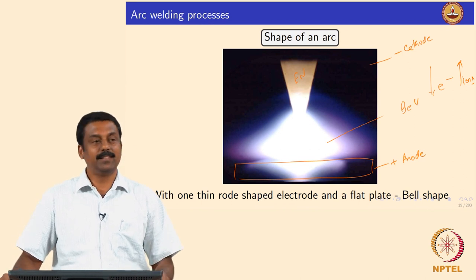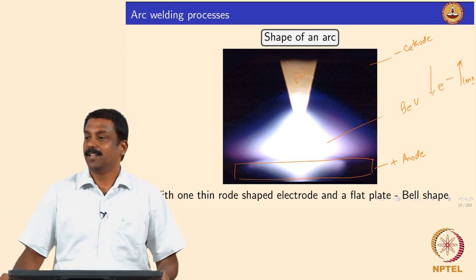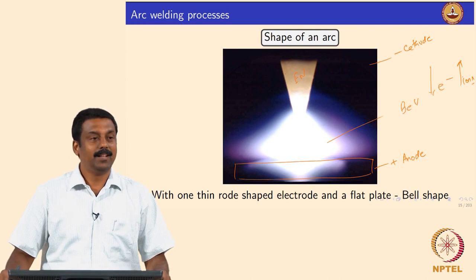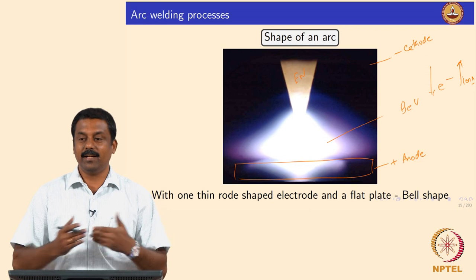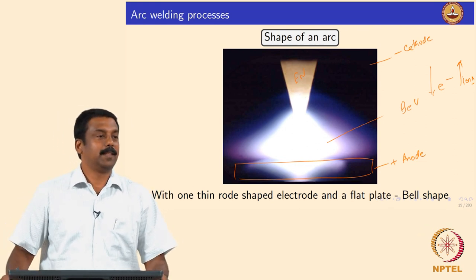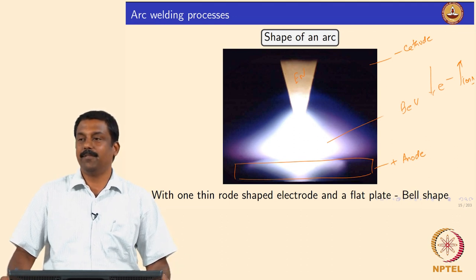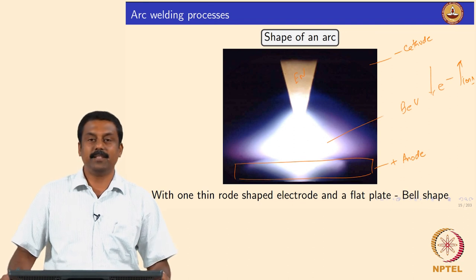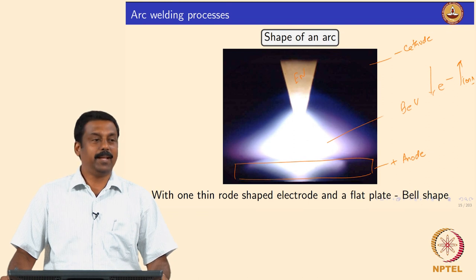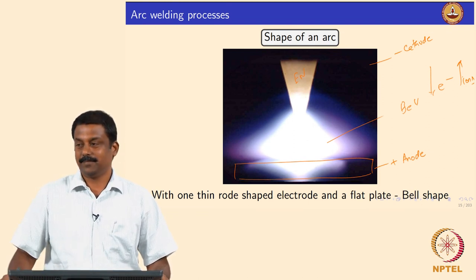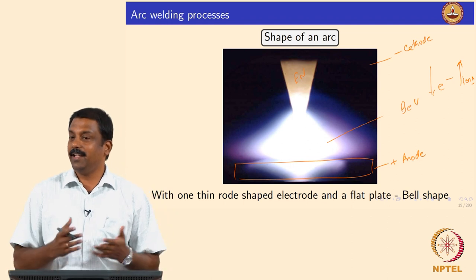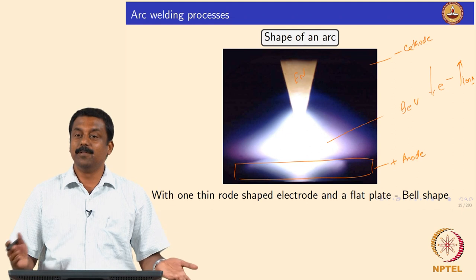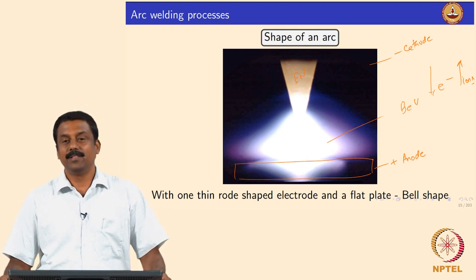In some cases you also need to send more ions, because ions are heavy and when they bombard the surface, they clean it — this is the principle of ion milling, where you generate ions and send them to erode the surface. For example, if you are trying to weld a material like aluminium which has a strong oxide layer, you need to remove that oxide layer, and ion bombardment is good for cleaning the surface.